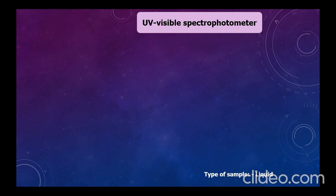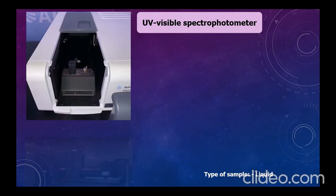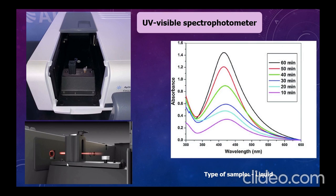In UV-visible spectrophotometry, the instrument measures the absorption of light by a sample at specific wavelengths within the UV and visible range. It is used to determine the concentration of nanoparticles in solution. Each type of nanoparticle has characteristic absorption properties, and by measuring absorbance at a specific wavelength, the concentration can be estimated using Beer-Lambert's law, which relates absorbance to concentration. The sample must be in liquid form.